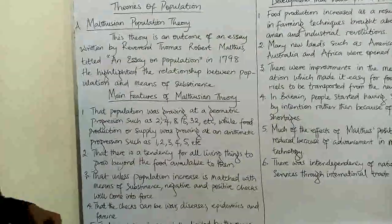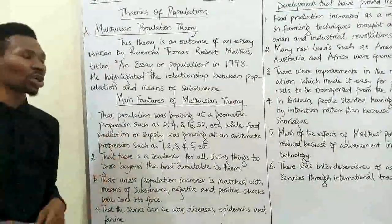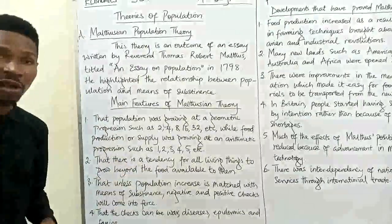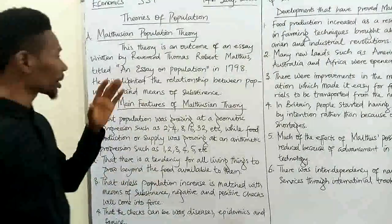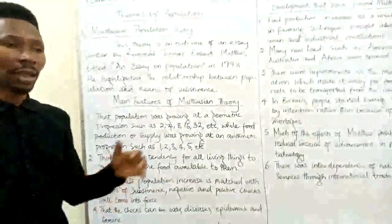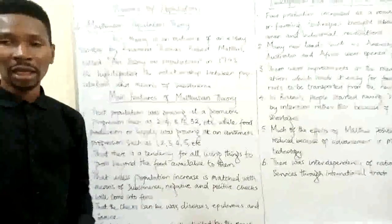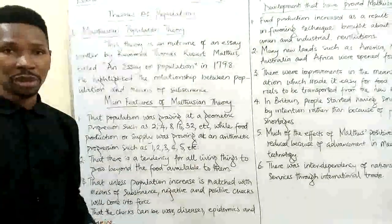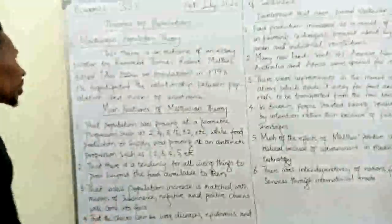He highlighted the relationship between population and the means of sustenance. The means of sustenance here refers to things that sustain people like food, clothing and shelter.